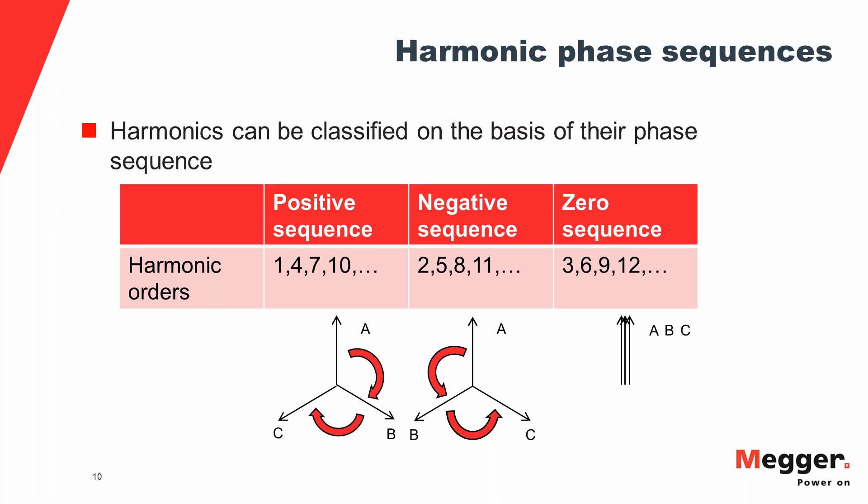Based on phase relationships, harmonics can be classified into three categories. The fundamental, fourth, seventh, tenth, thirteenth, and so on fall under positive sequence. Second, fifth, eighth, eleventh, fourteenth are all negative sequence harmonics. The multiples of the third harmonic — third, sixth, ninth, twelfth — fall under zero-sequence harmonics.